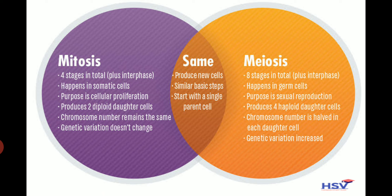In mitosis there are four stages in total, but in meiosis there are eight stages in total. Mitosis happens in somatic cells — somatic cells are body cells that accept sperm and egg cells. Meiosis happens in germ cells, which are biological cells that give rise to gametes of an organism that reproduce sexually. The purpose of mitosis is cellular proliferation — a process where the number of cells increases. The purpose of meiosis is sexual reproduction, a process in which a new organism is created. Mitosis produces two diploid daughter cells, while meiosis produces four haploid daughter cells.